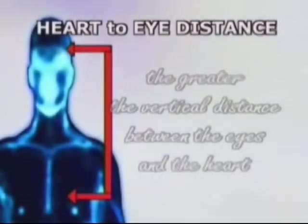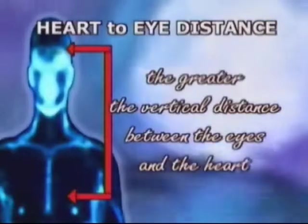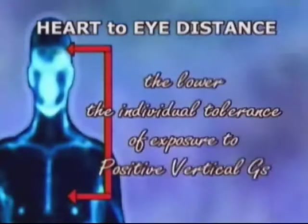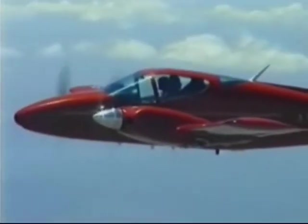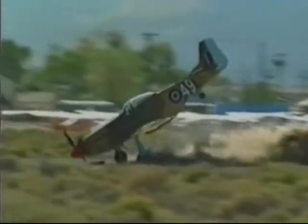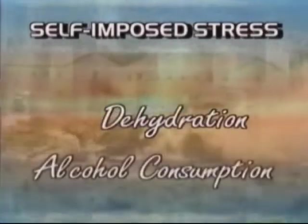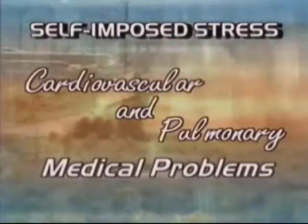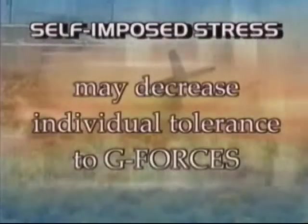Heart-to-eye distance is another factor: the greater the vertical distance between the eyes and the heart, the lower the individual's tolerance to positive vertical G's. In other words, the greater the distance between the heart and eyes, the more difficult it is for the heart to pump enough blood to the brain and eyes during positive vertical G exposure. A pilot seated in an upright position has a lower tolerance to positive vertical G's than a pilot seated in a reclined position. Self-imposed stress such as fatigue, dehydration, and alcohol consumption, as well as cardiovascular and pulmonary medical problems, may decrease individual tolerance to G-forces.